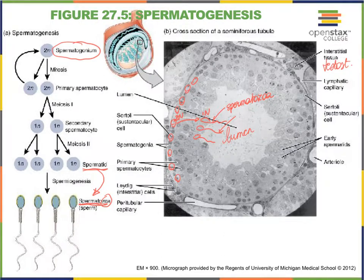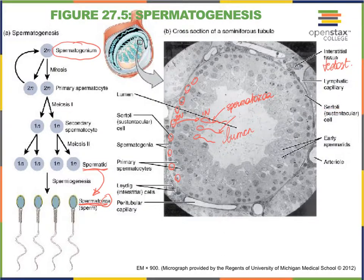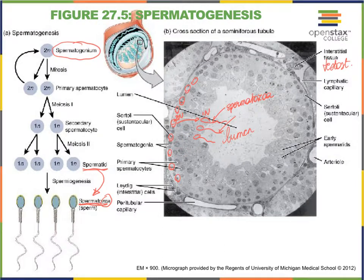Inside the walls of the seminiferous tubules, we have a second cell type. We have our spermatogonia giving rise to sperm cells, and then we have another cell called the Sertoli or sustentacular cell. We can't easily point them out here, but we'll explain what these cells are all about next. So we have looked at three cell types: the cells that become sperm cells, the interstitial cells, and the Sertoli cells that are actually going to take care of spermatogenesis.